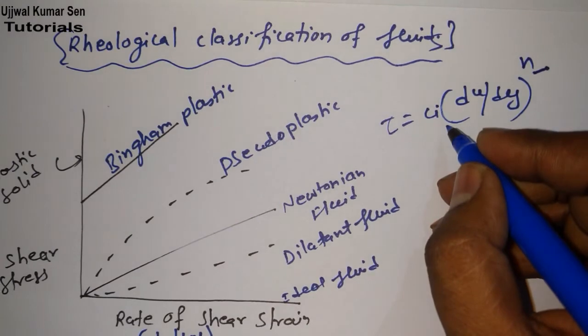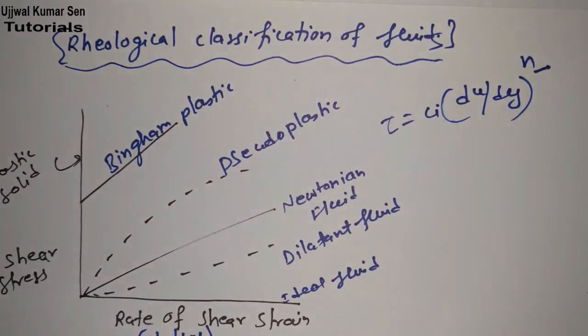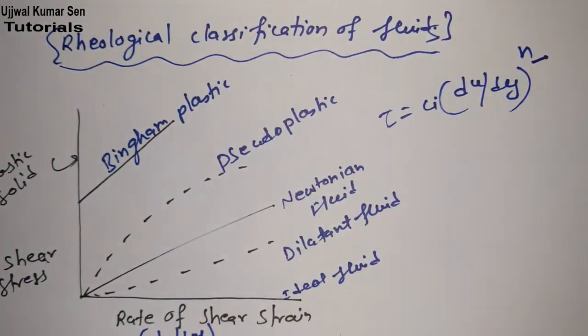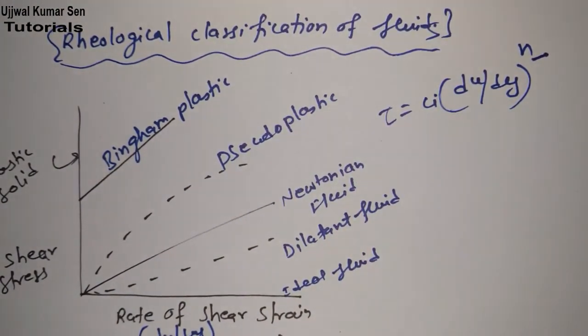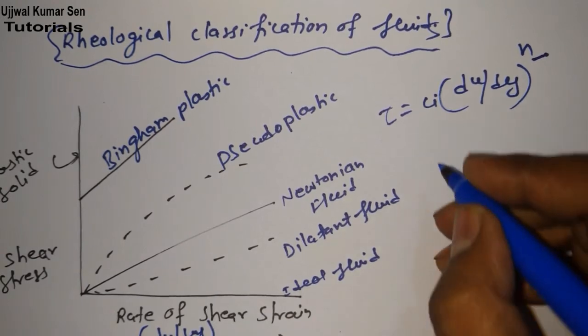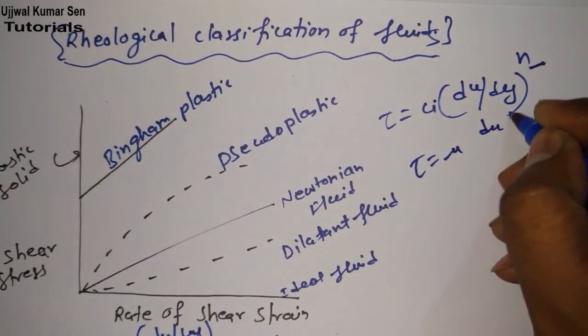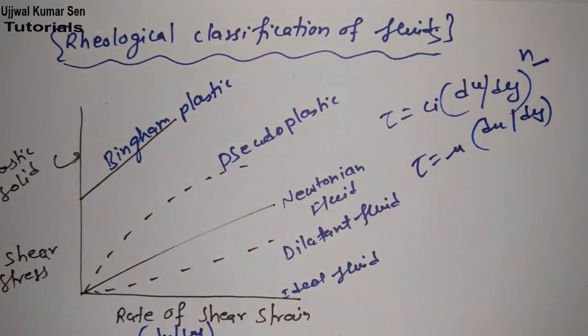Now let's talk about all these types of fluid. Newtonian fluid: according to this, we must get tau = μ(du/dy). When will we get this equation from here?